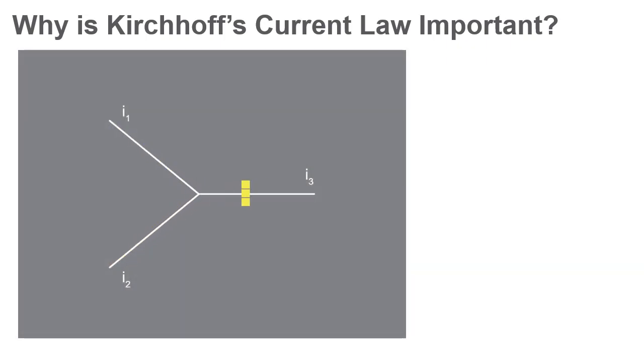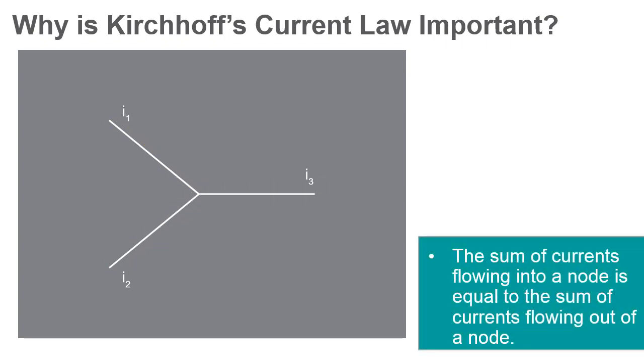The principle of conservation of electric charge implies that at any junction in an electrical circuit, the sum of currents flowing into that node is equal to the sum of currents flowing out of that node. Another way of saying this is that the sum of all currents in a network of conductors meeting at a single point is zero.